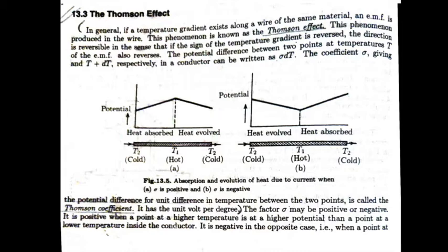Like Peltier Effect, this Thomson Effect is also reversible because if the sign of the temperature gradient is reversed, the direction of the EMF also reverses. If we take two points in the wire whose temperatures are at T Kelvin and T plus DT Kelvin, then the potential difference between the two points will be sigma into DT, where sigma is called the Thomson Coefficient.